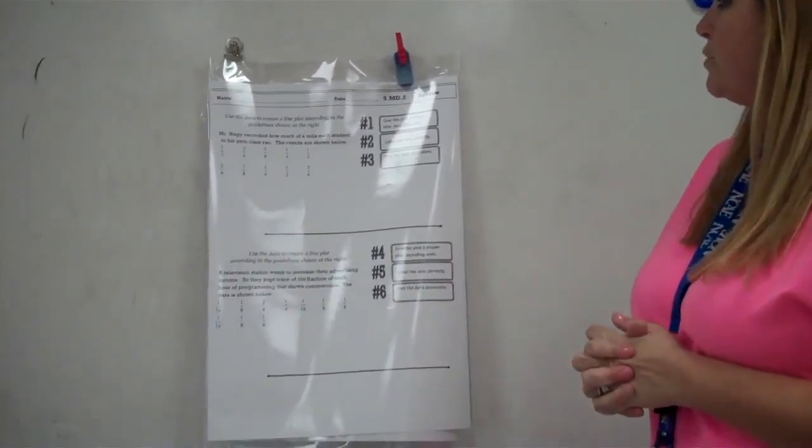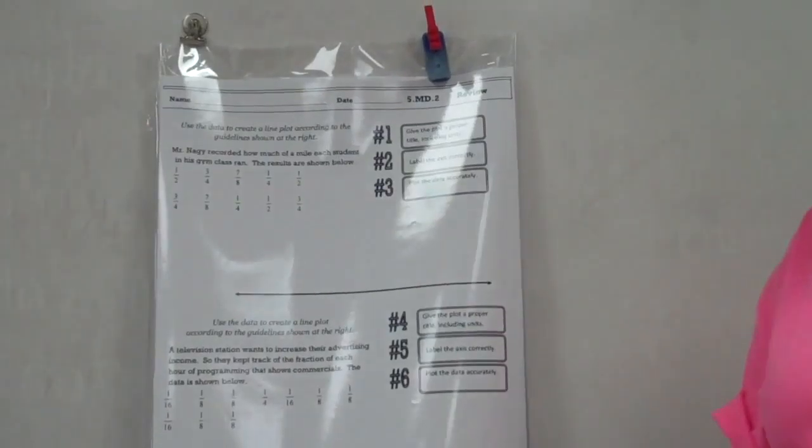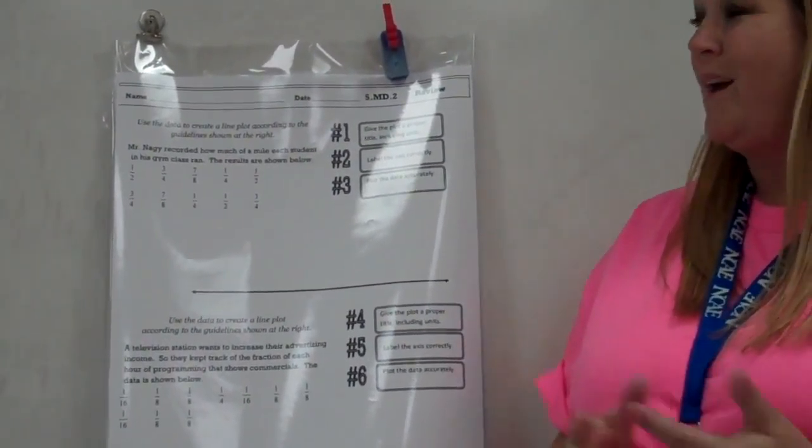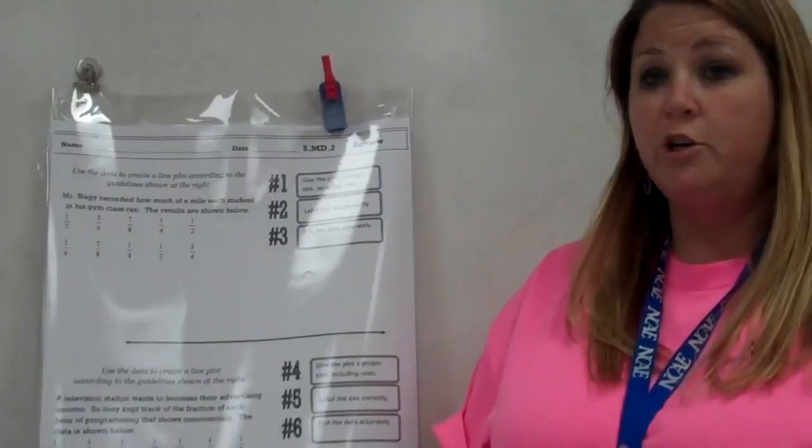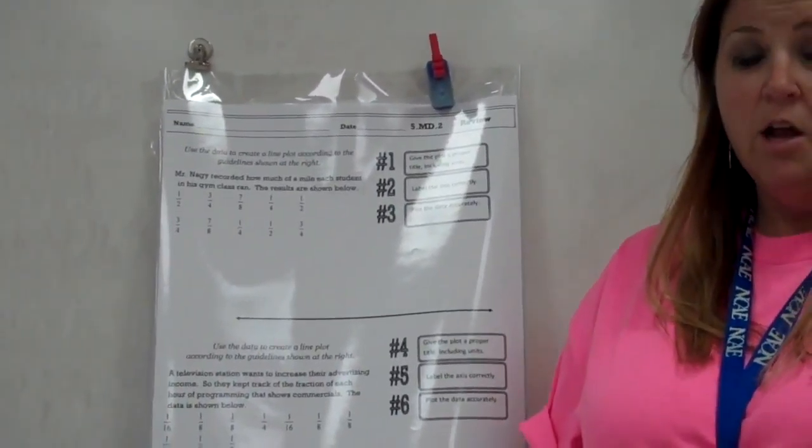So our first question is about Mr. Nagy, who recorded how much of a mile each student in his gym class ran. The results are shown below - you see the ten fractions that are listed there. When you have a line plot and you need to put the data on the line plot, right now we have nothing on our number line, so we've got to create what we're going to skip count by.